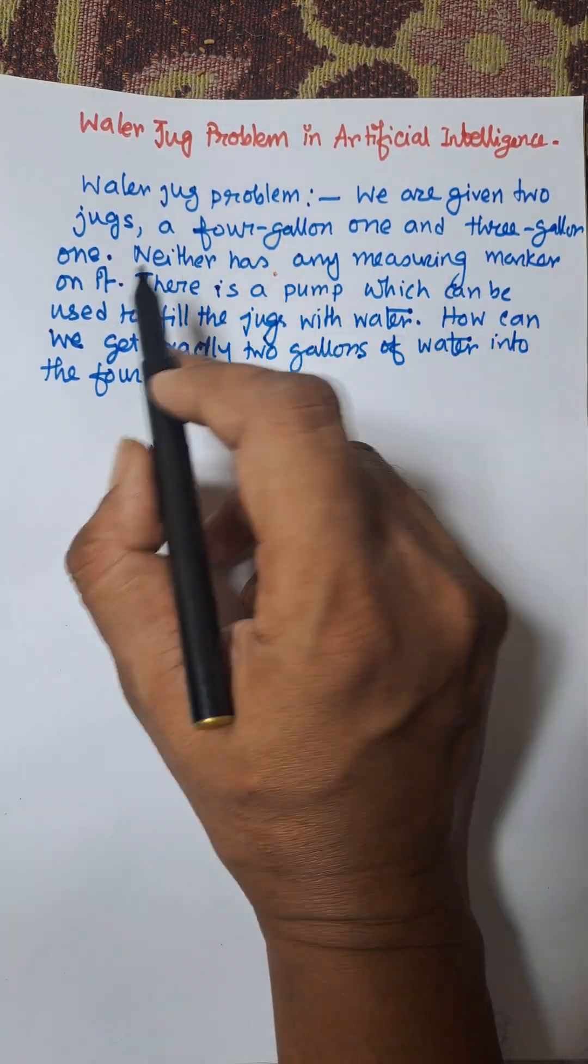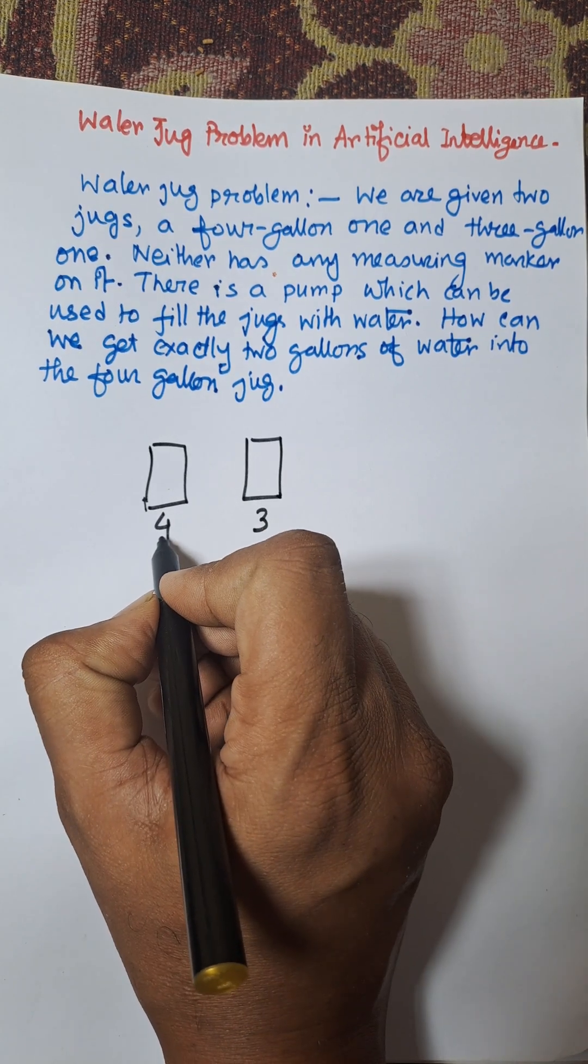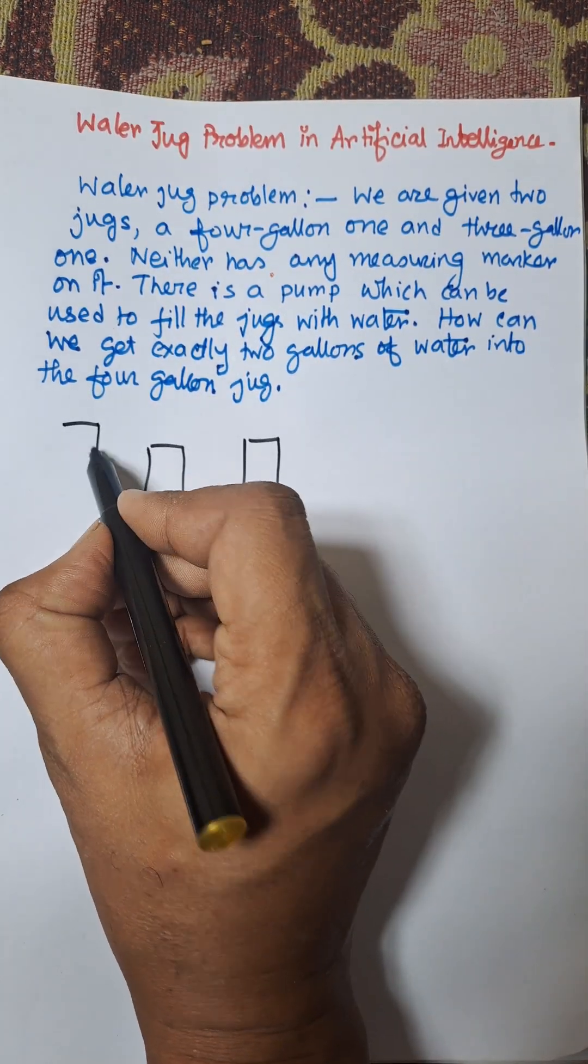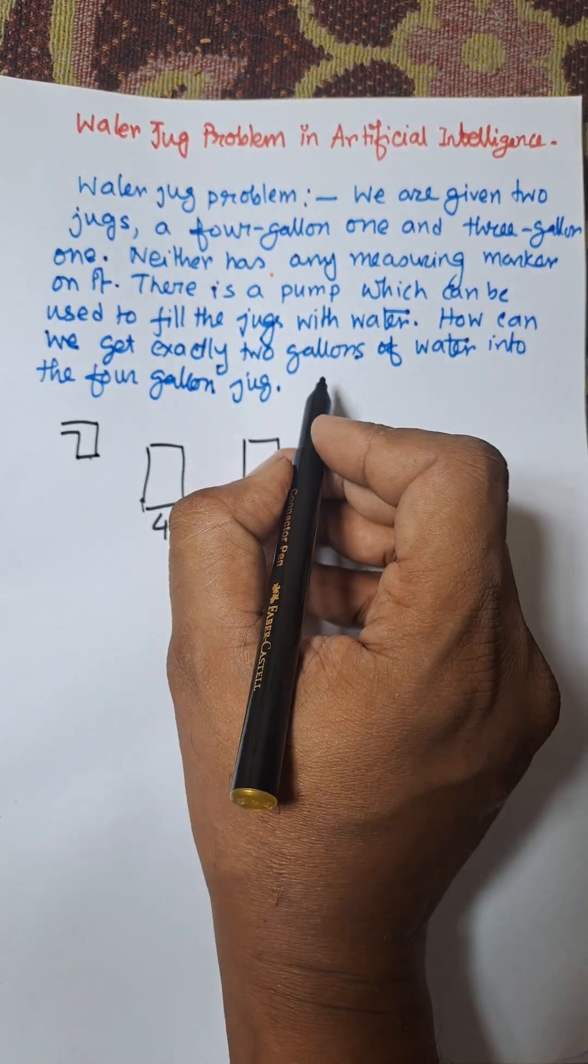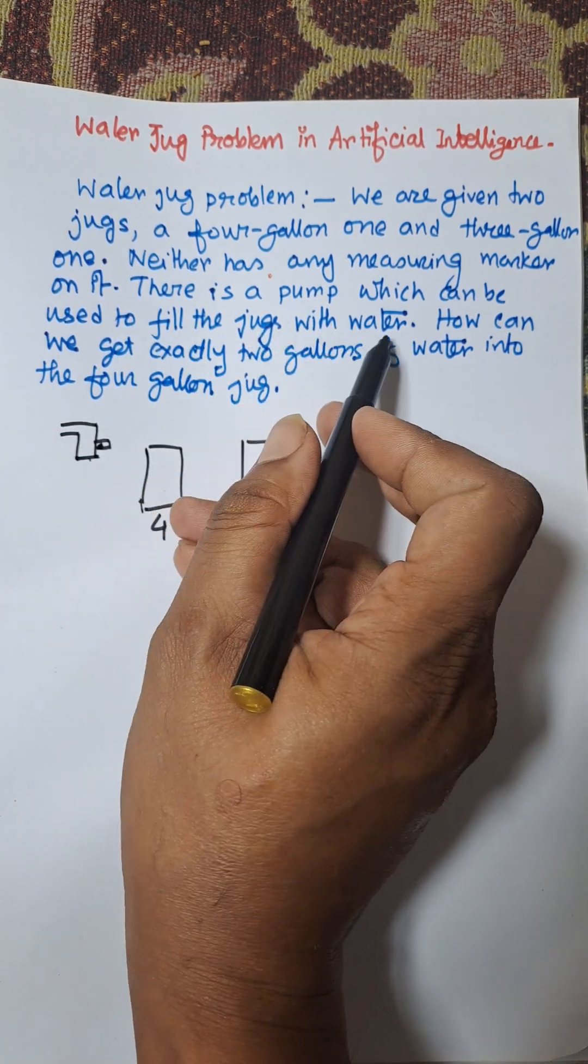Neither has any measuring marker on it. There is a pump which can be used to fill the jugs with water.